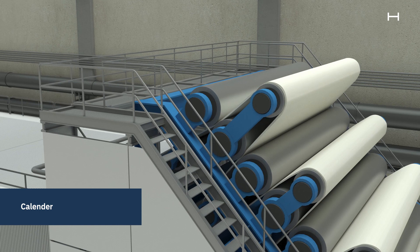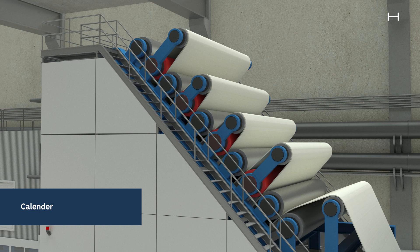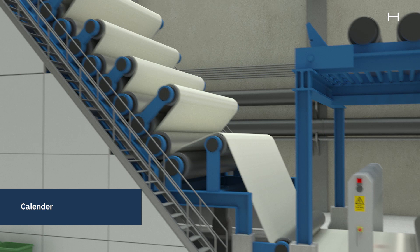The PM53 has a 10 roll calendar with 9 nips. Four of the rolls are thermo rolls which can be heated up to 260 degrees Celsius by steam-heated oil. The heated rolls make the paper smooth and glossy. The caliper is also adjusted to the desired level.